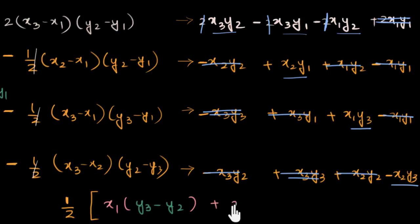Now what is the next one? I'll take x2 common out over here. And then I'll have, if I take x2 common, I'll get x2 y1 minus y3. So y1 minus y3. Plus, I'll take x3 common now. And I will get y2 minus y1. And there we have it.